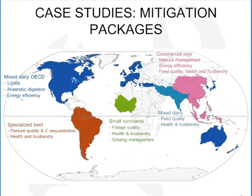Now let's have a look at the case studies. On this map, you have the five case studies we developed with the main options included in the packages. For specialized beef production in South America, we investigated the impact of improving pasture quality through better management and carbon sequestration, as well as better health management and husbandry practices. For mixed dairy production in OECD countries, we looked at lipid supplementation to dairy cows, anaerobic digestion, and overall energy efficiency in the dairy chain.